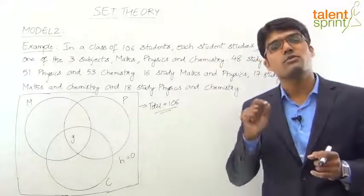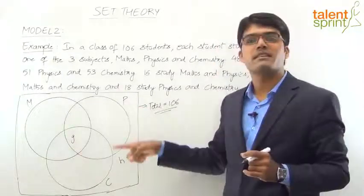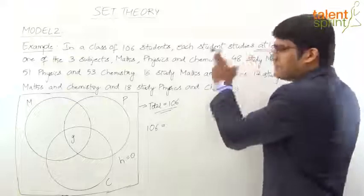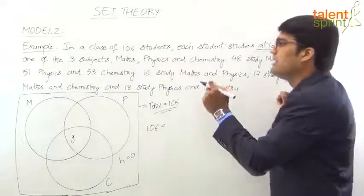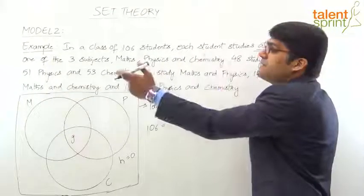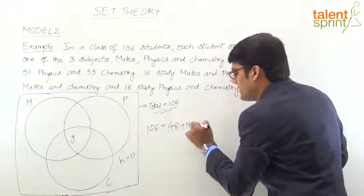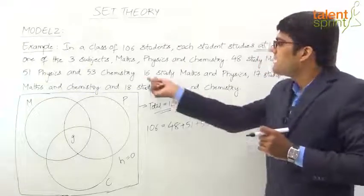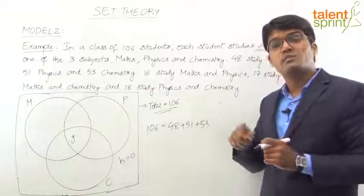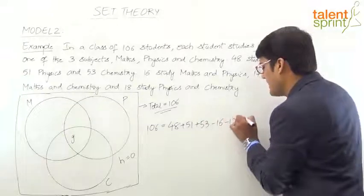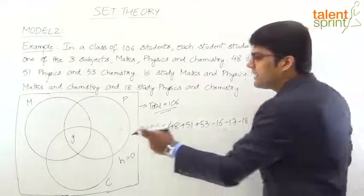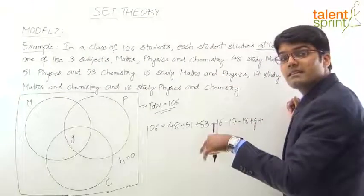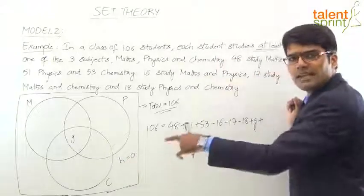Now let's apply the formula. The total is 106, which equals |A| + |B| + |C| − |A∩B| − |B∩C| − |C∩A| + |A∩B∩C| + H. Here A = Maths = 48, B = Physics = 51, C = Chemistry = 53. So: 48 + 51 + 53 = 152. Minus both AB (16), minus BC (18), minus CA (17): 152 − 16 − 17 − 18 = 152 − 51 = 101. Plus G (all three subjects) plus H. Since H = 0, we add G. So: 106 = 101 + G + 0.